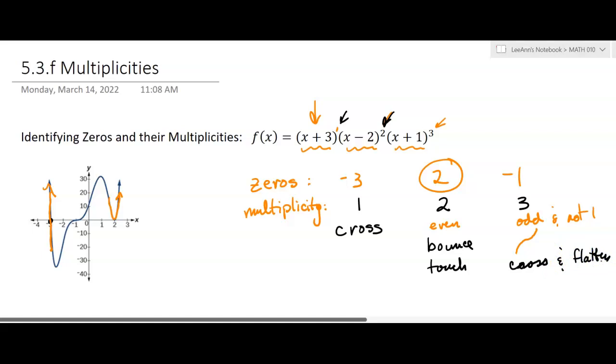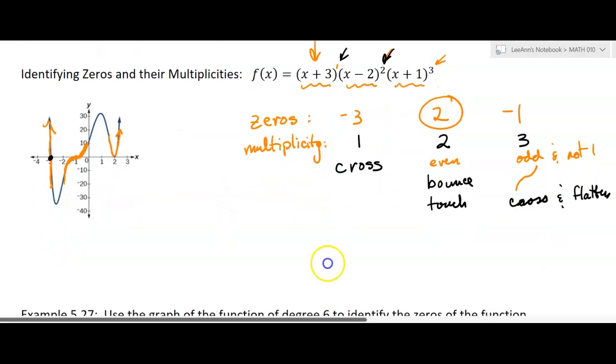So right here, at negative 1, it's coming up, and it's going to cross the x-axis, but it's going to kind of flatten out a little bit, like you do on an x-cubed curve, on a cubic curve. So that's what's happening. So those are the zeros. We find the zeros by the factors, and then we can identify their multiplicities, which is the exponent.